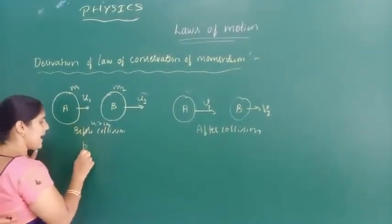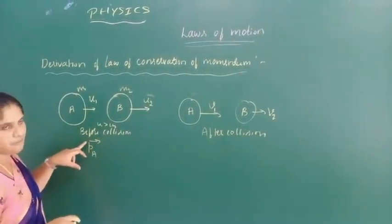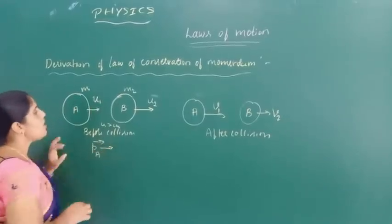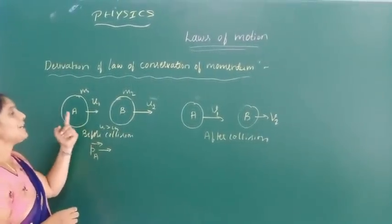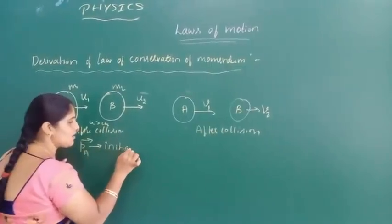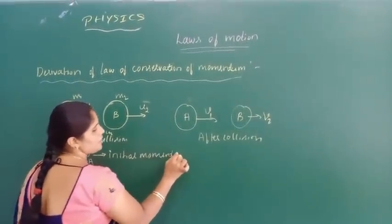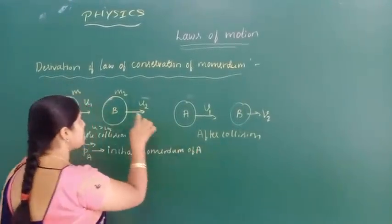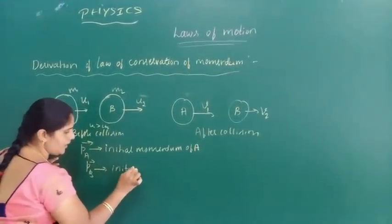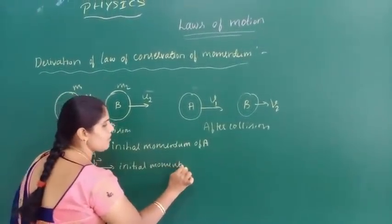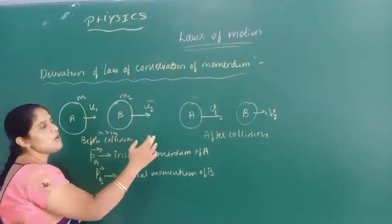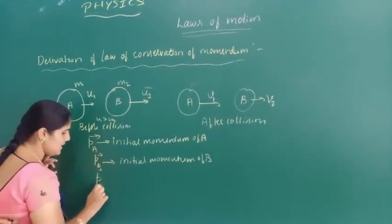We shall write these in vector form because momentum is a vector quantity. So PA vector is the initial momentum of A, and PB vector is the initial momentum of B. After collision, as velocity changes, momentum also changes. That momentum will be written as PA dash, which is the final momentum of A, and PB dash, which is the final momentum of B.